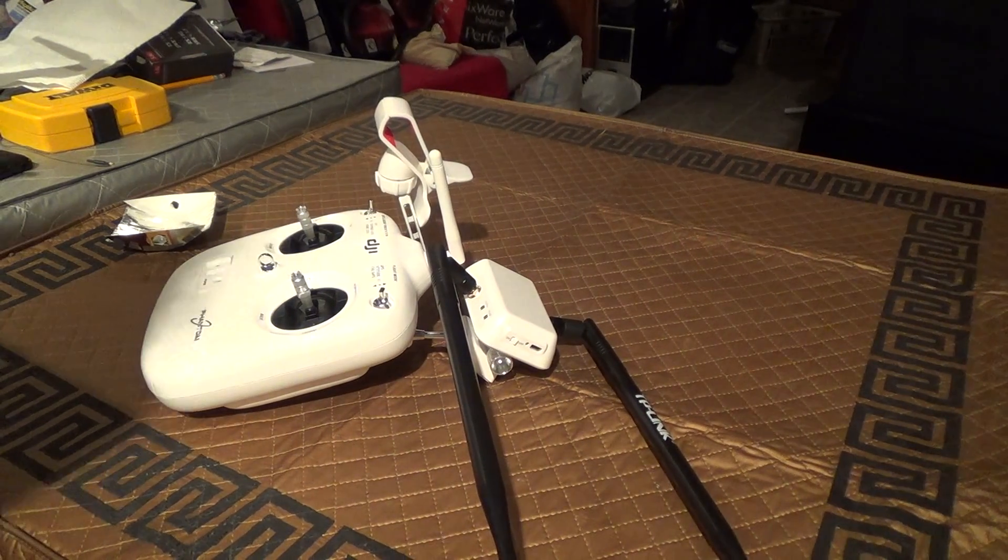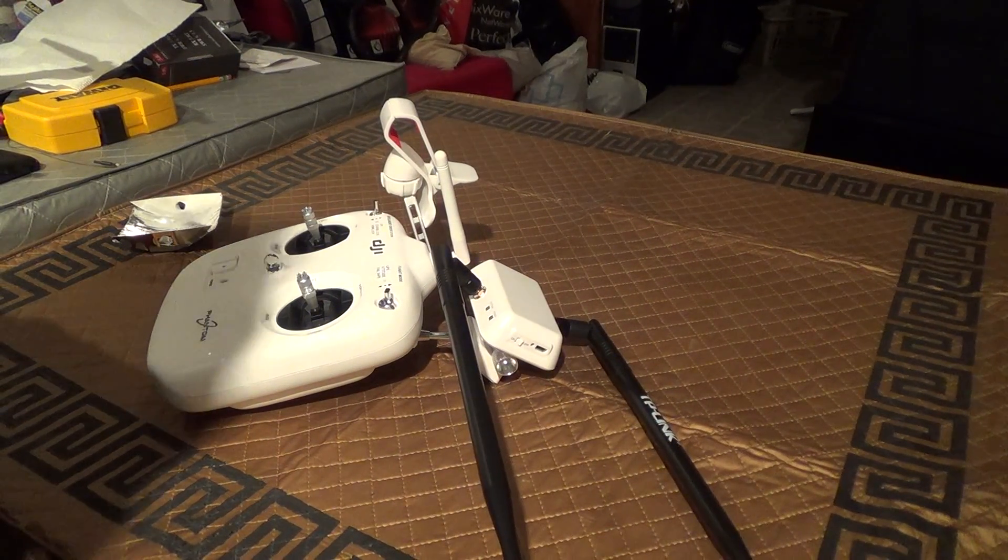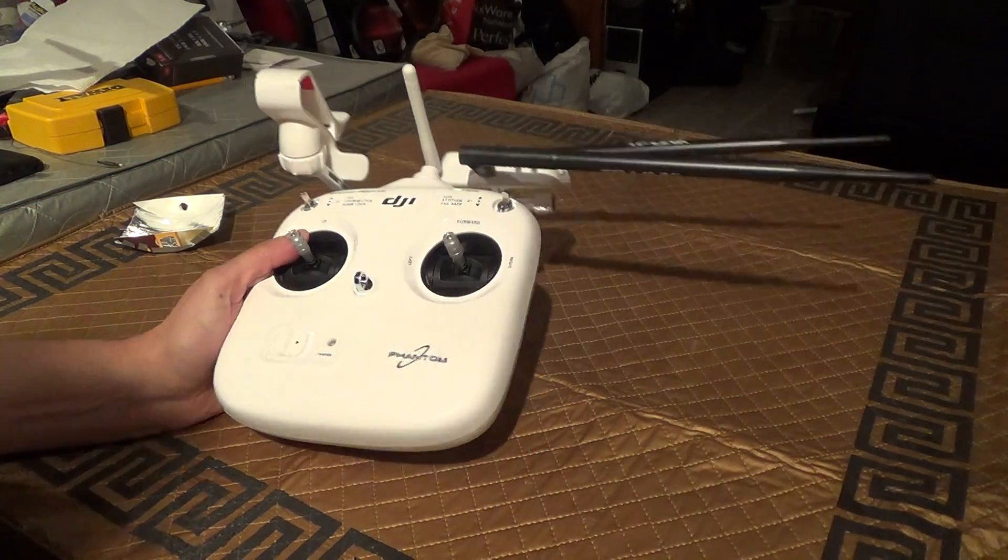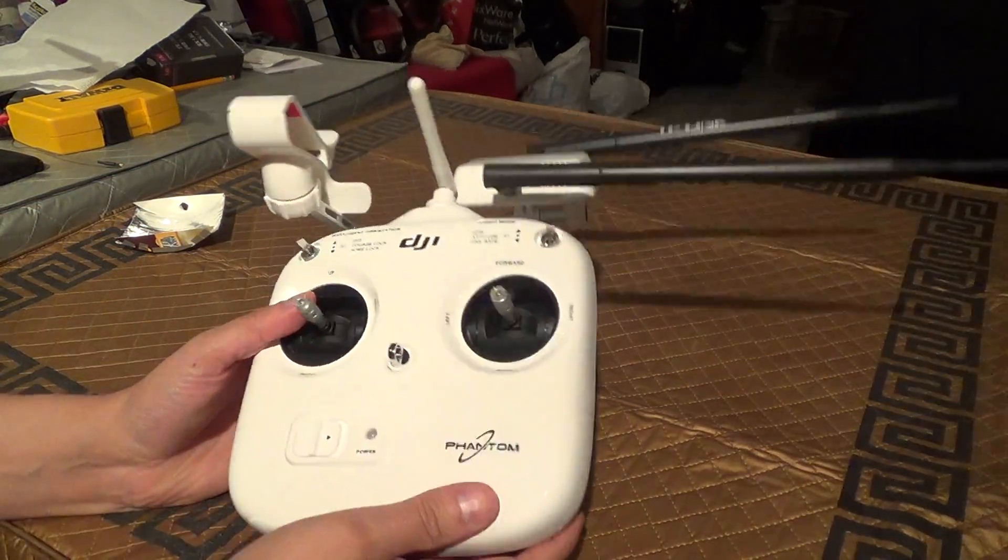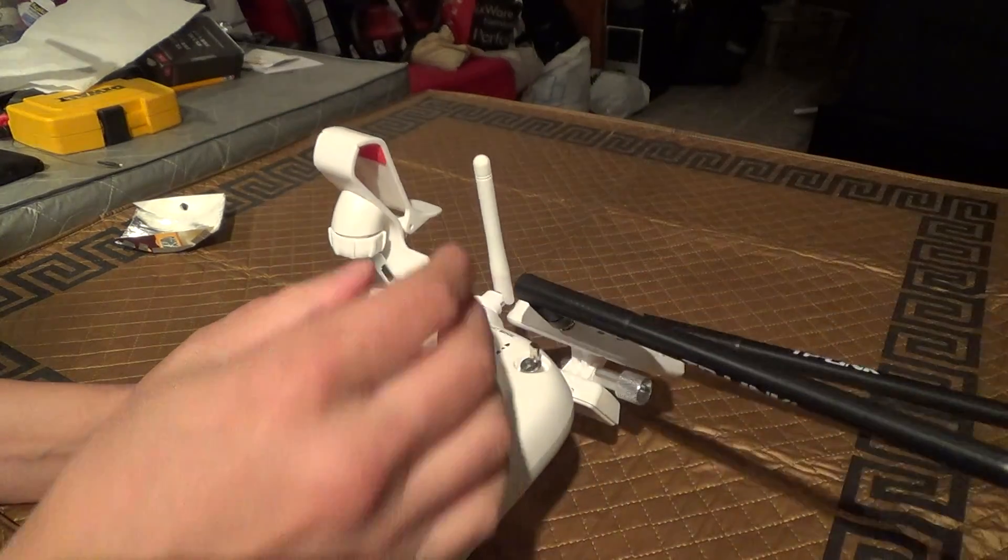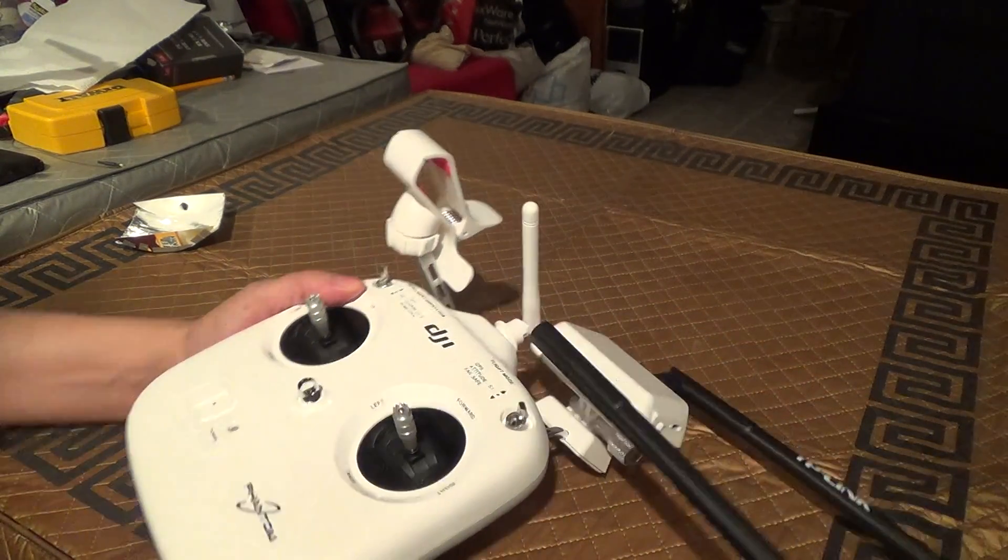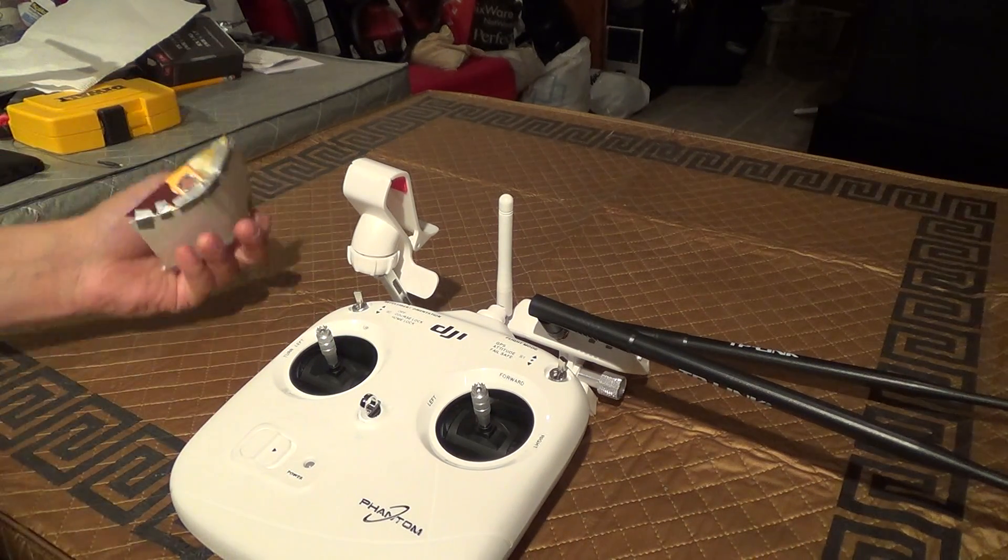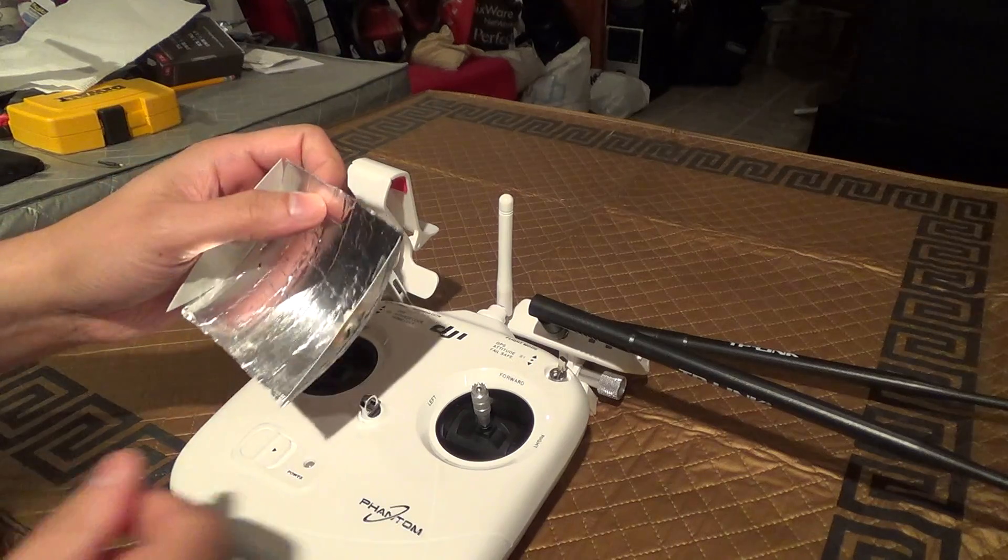Hello folks. I just thought I'd showcase another way you can improve the range of your 5.8 gigahertz transmitter or any transmitter for that matter that uses an omnidirectional antenna, and that is to use an aluminum foil reflector like what I made over here.